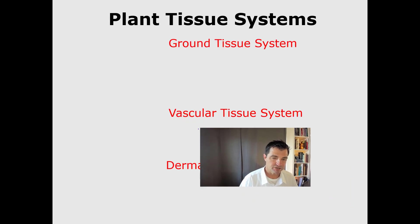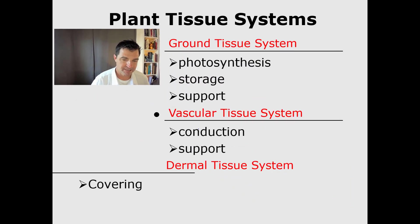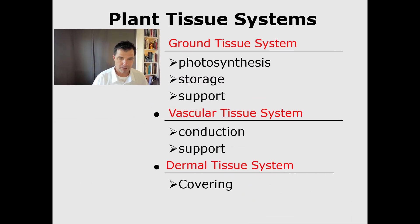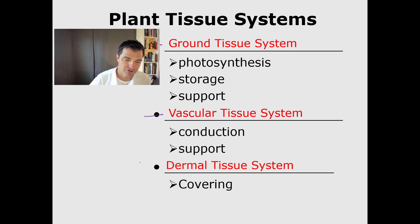Plants have three kinds of tissue systems: the ground tissue system, the vascular tissue system, and the dermal tissue system.